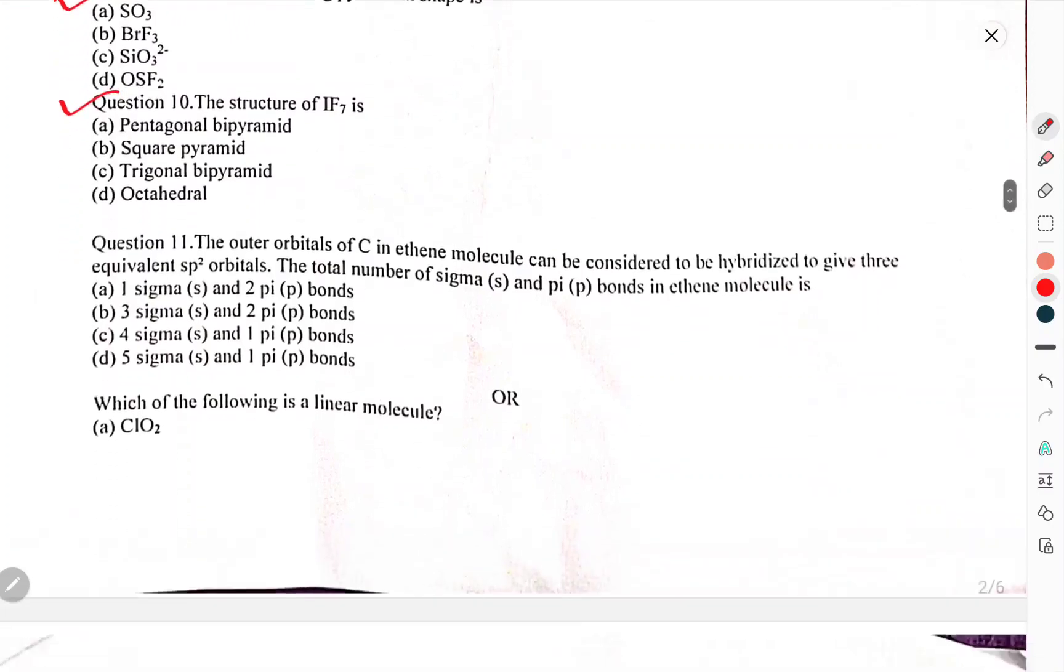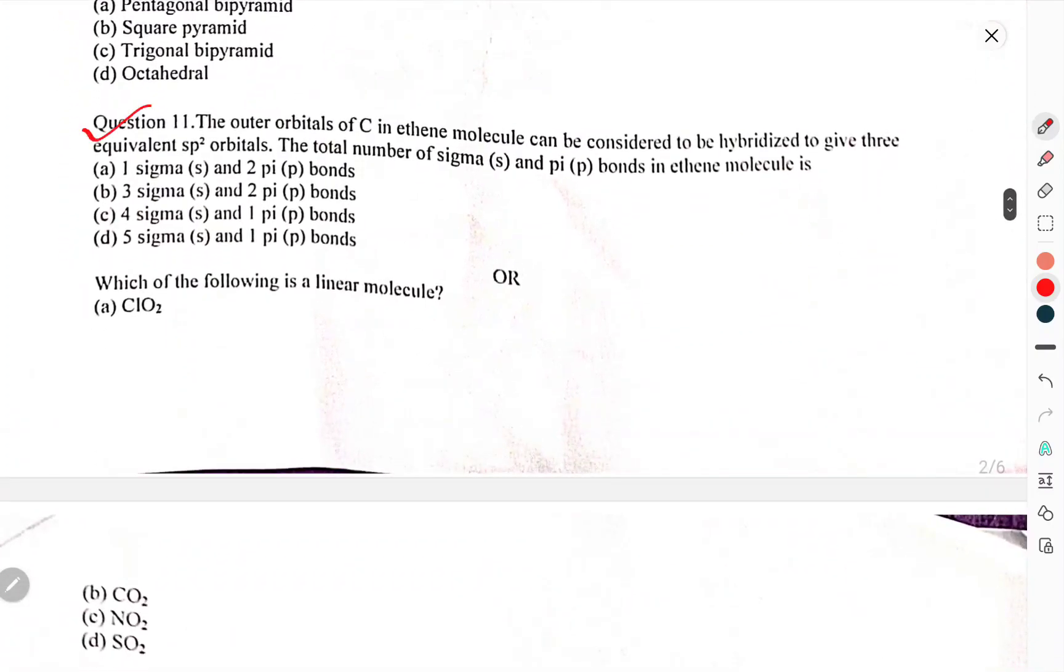Question 10: The structure of IF7 is? The outer orbitals of carbon in ethane molecule can be considered to be hybridized to give three equivalent sp2 orbitals. The total number of sigma and pi bonds in the ethane molecule is?